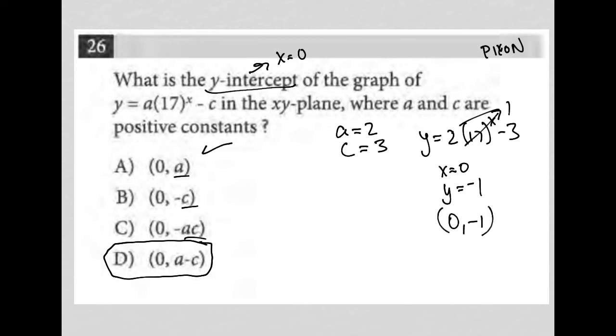What I then do is go over to the answer choices and plug these values in to see which one matches this 0, negative 1. So here, since a is 2, this would be 0, 2. That's not 0, negative 1, so that's gone. Choice b, this would be 0, negative 3, because c is 3, but that's not what I want, so that's gone. Choice c would be 0, negative a times c, so negative 6. That's not negative 1, so that's also gone.